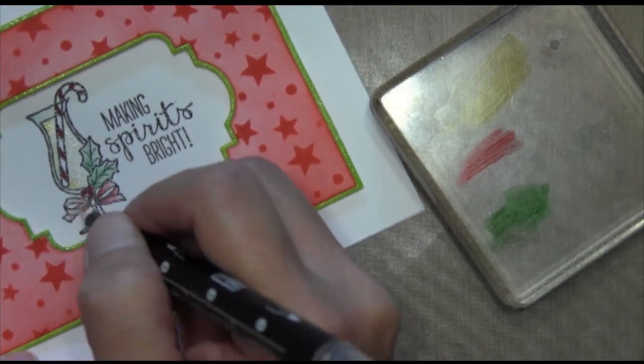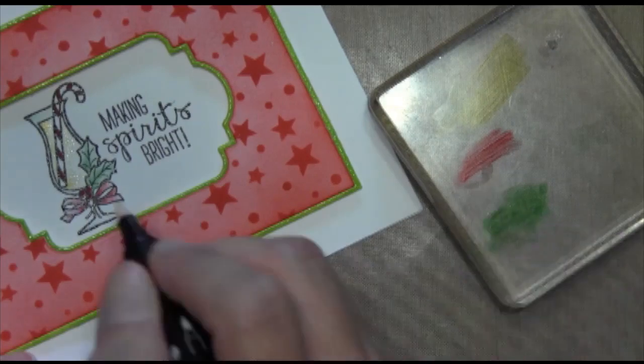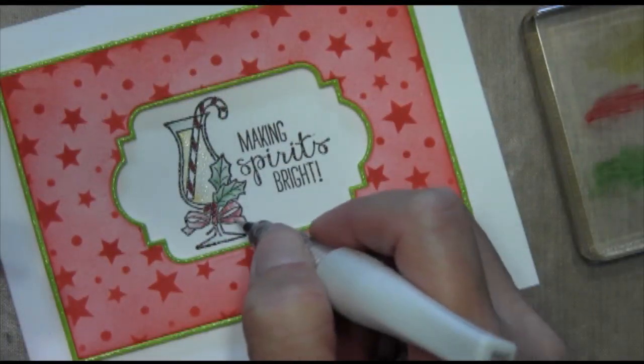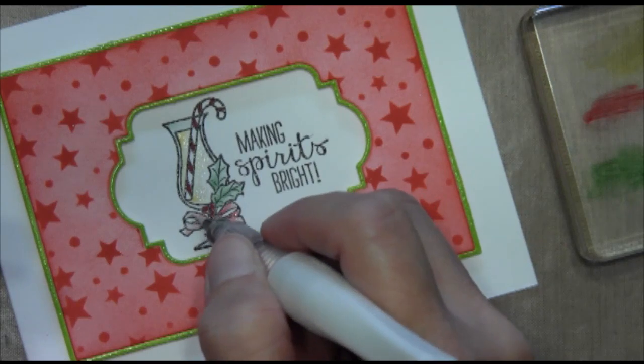As you can see, I was going to use shimmer on the bow and decided I wanted to make it red. So I'm using that same blender pen technique with Real Red, coloring the bow. Then I'll go over it again with the Wink of Stella pen.